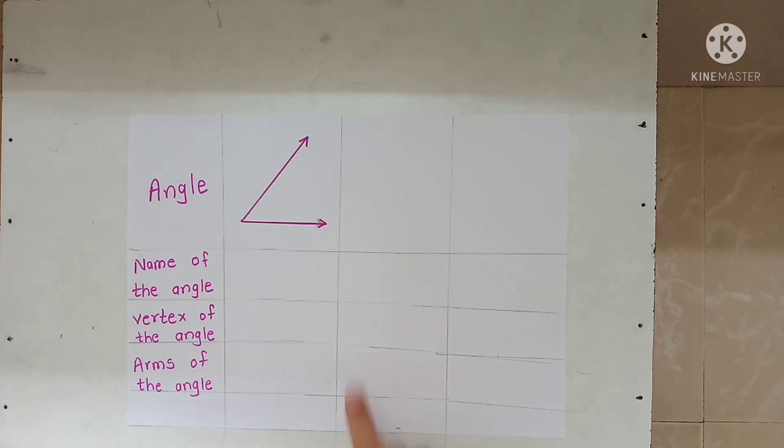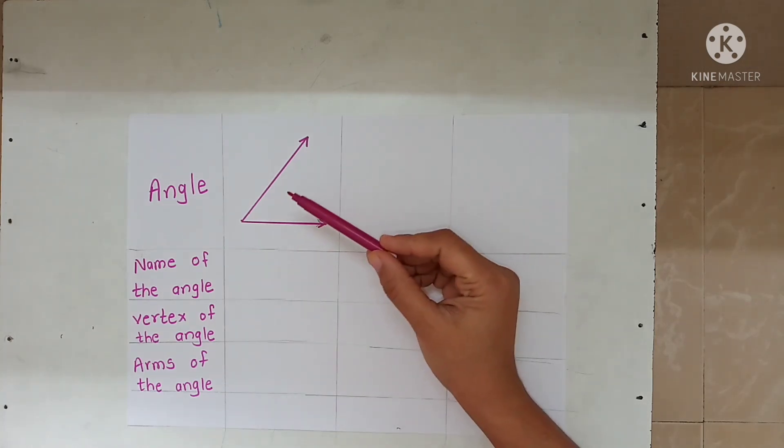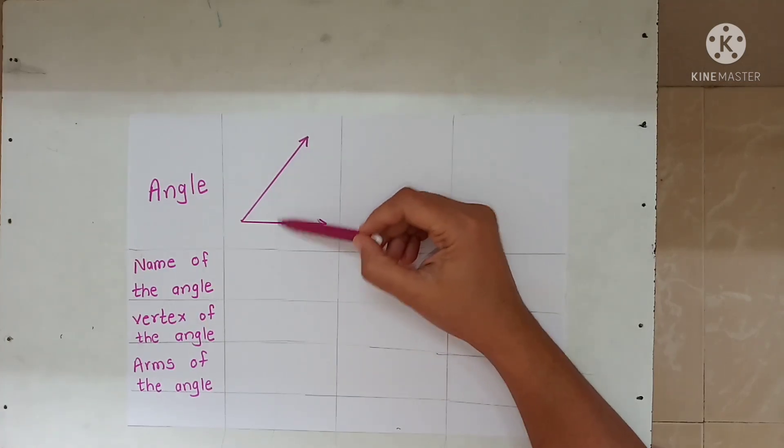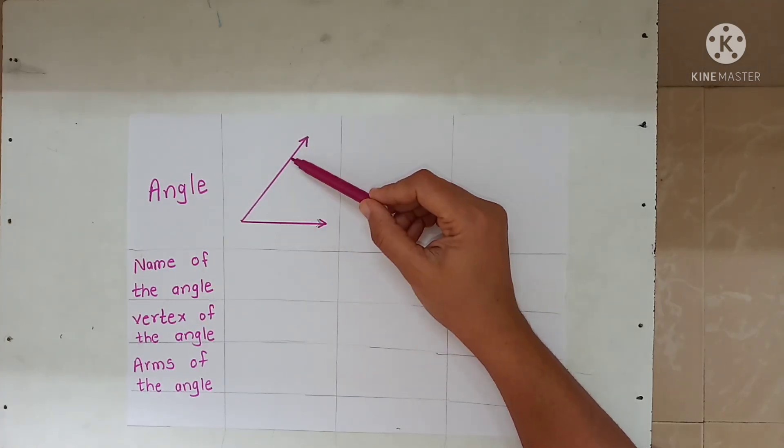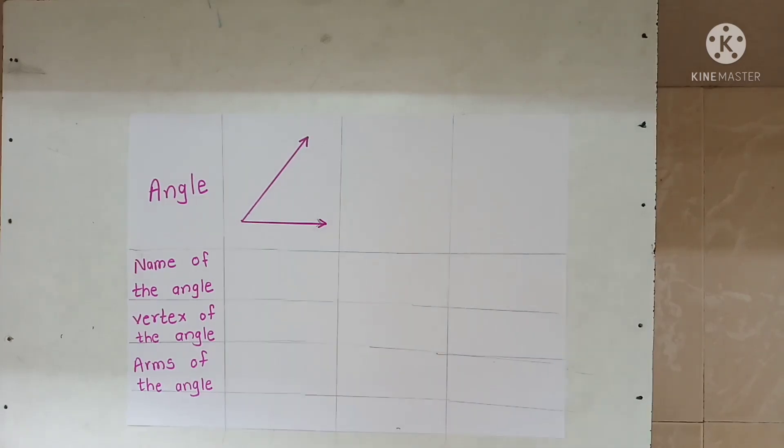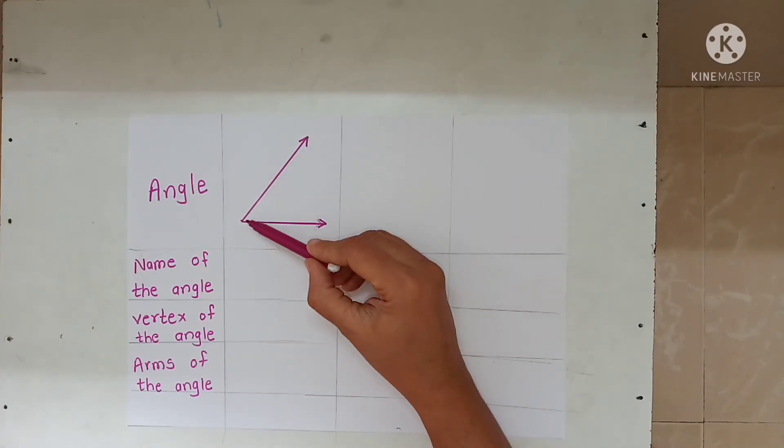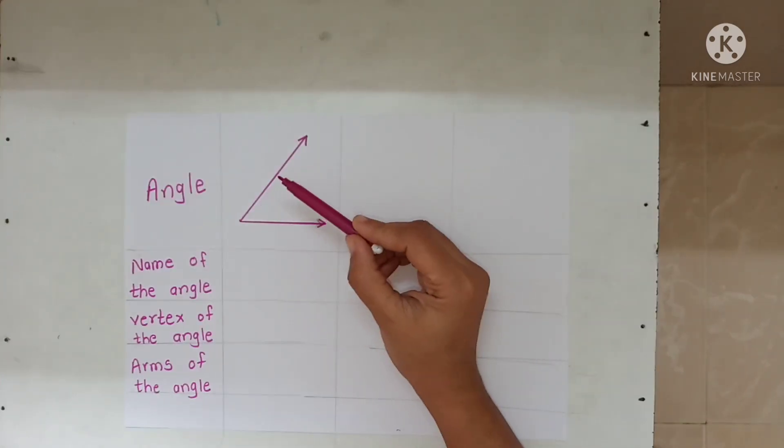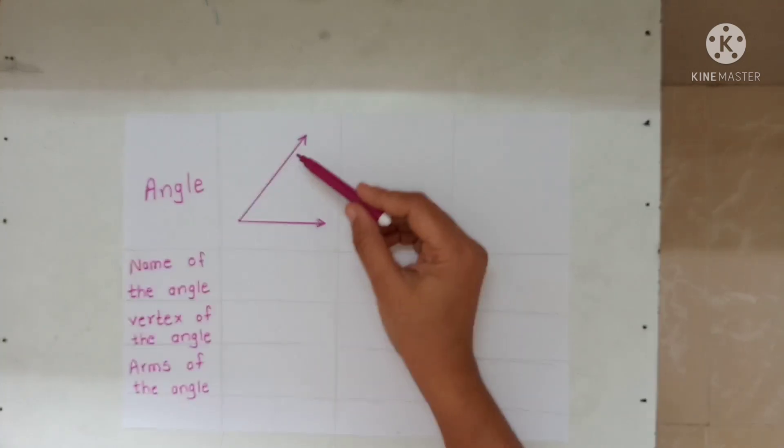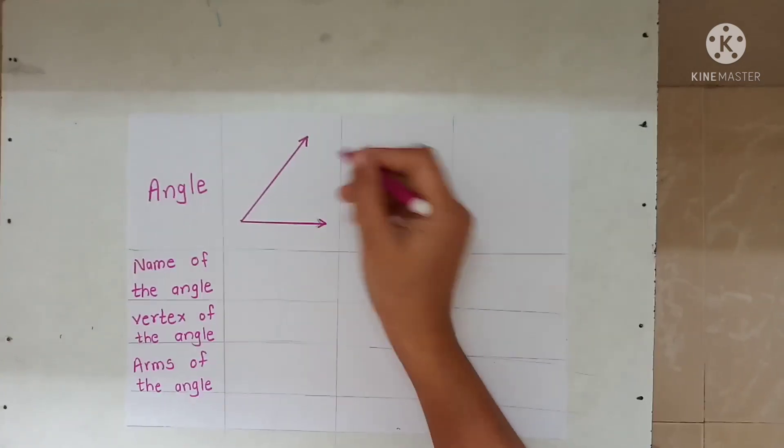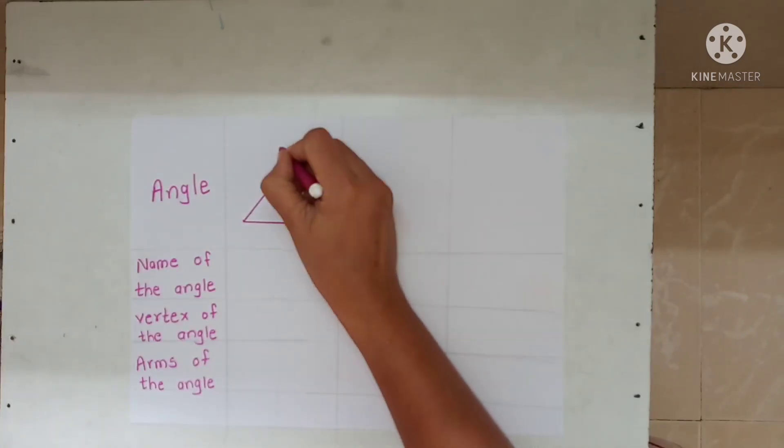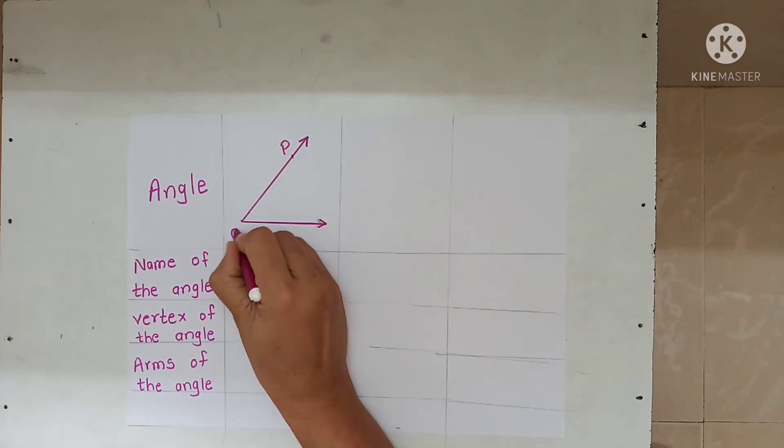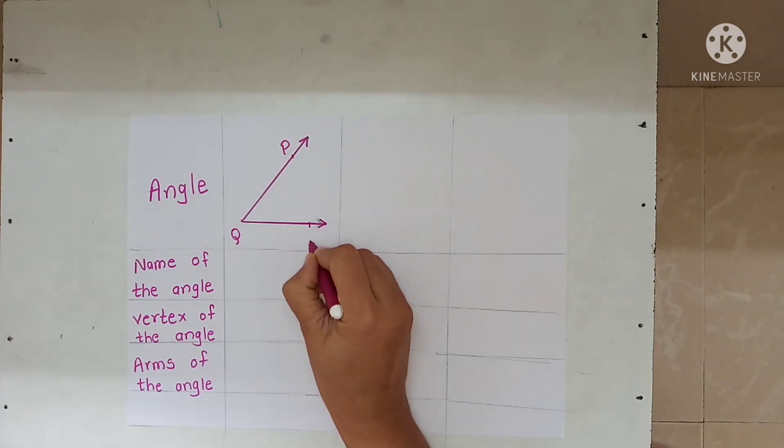We have learnt angles in 4th standard and 5th standard. When two lines meet, they form angles. This is angle PQR. All right, this is the angle, angle P, Q, R. Okay?